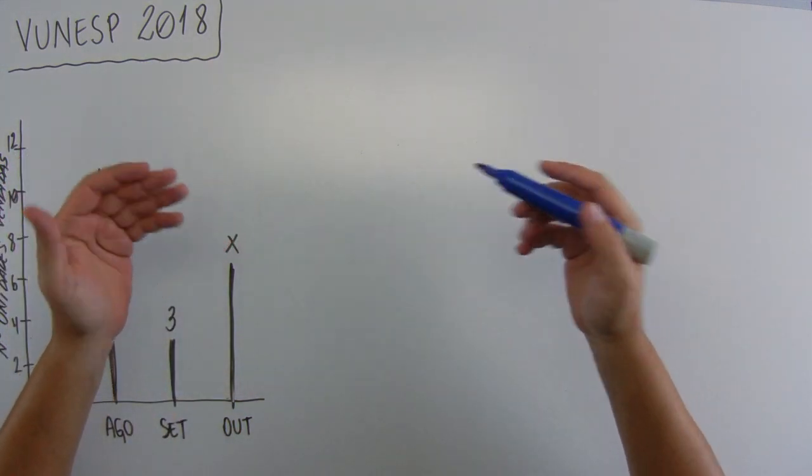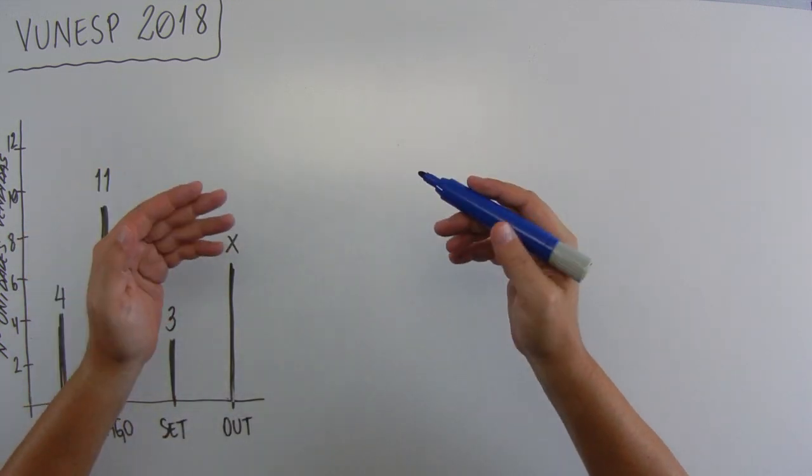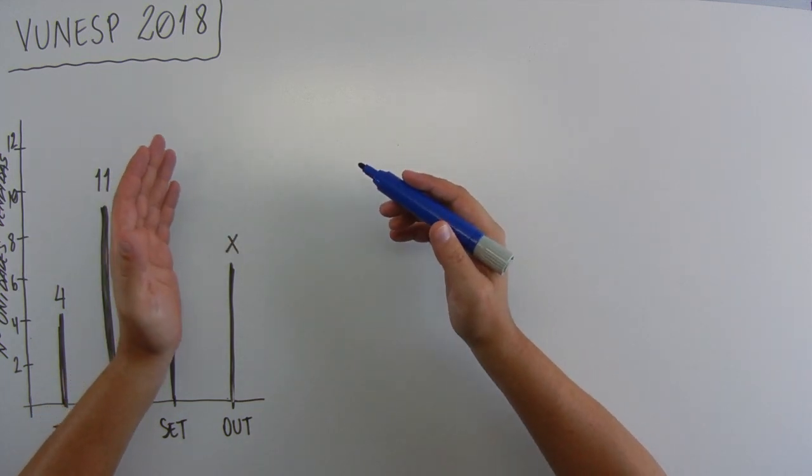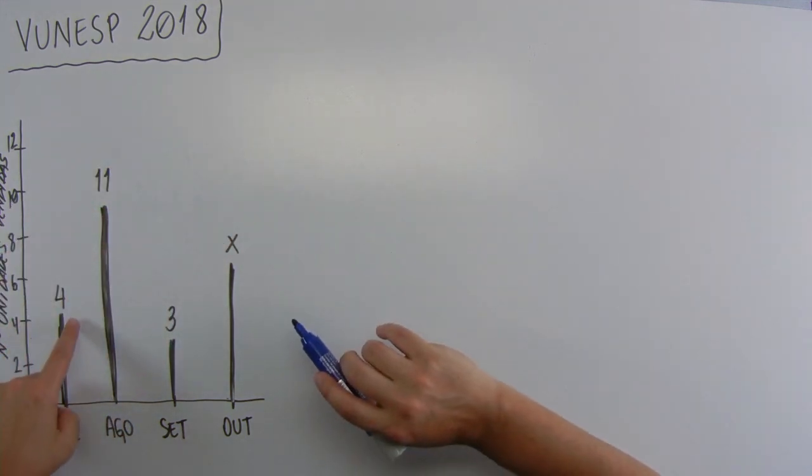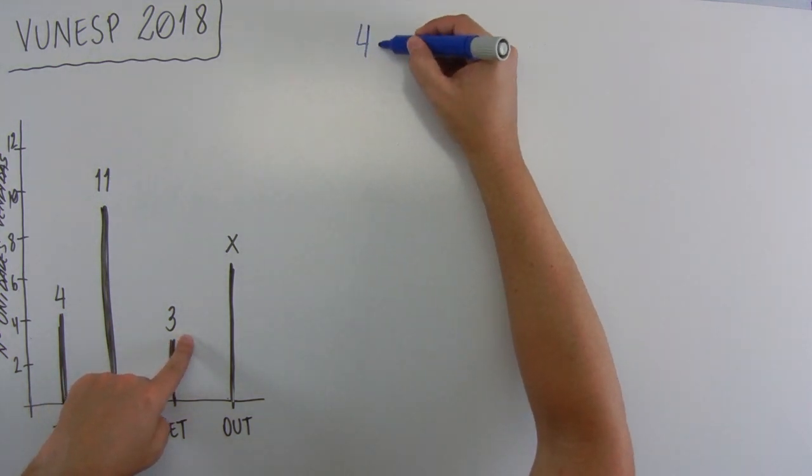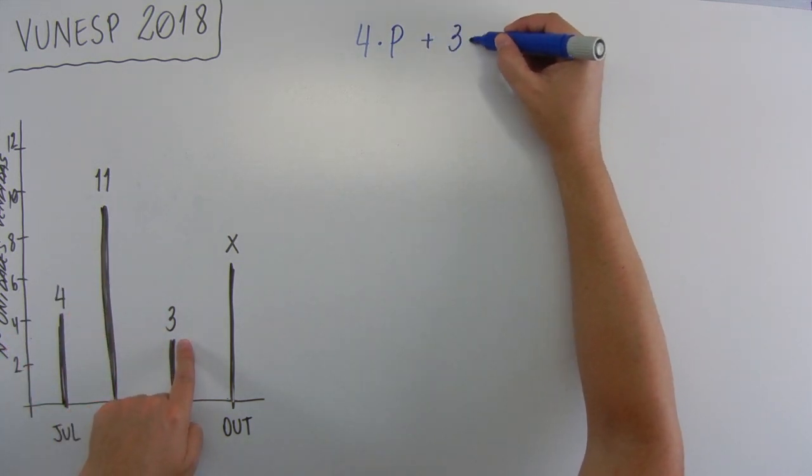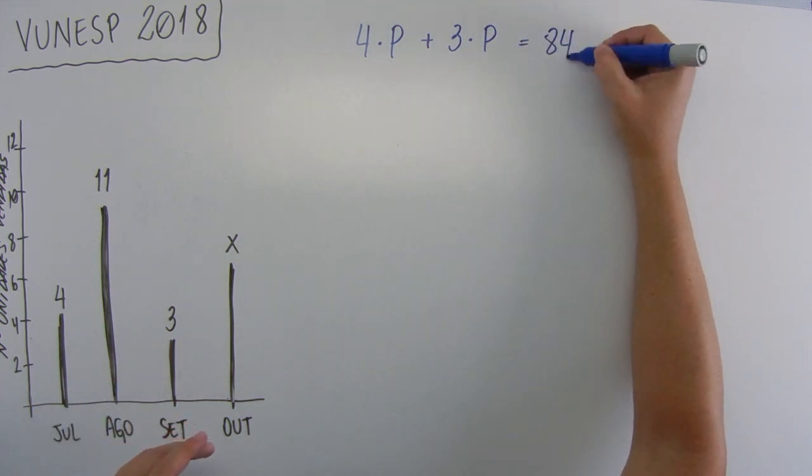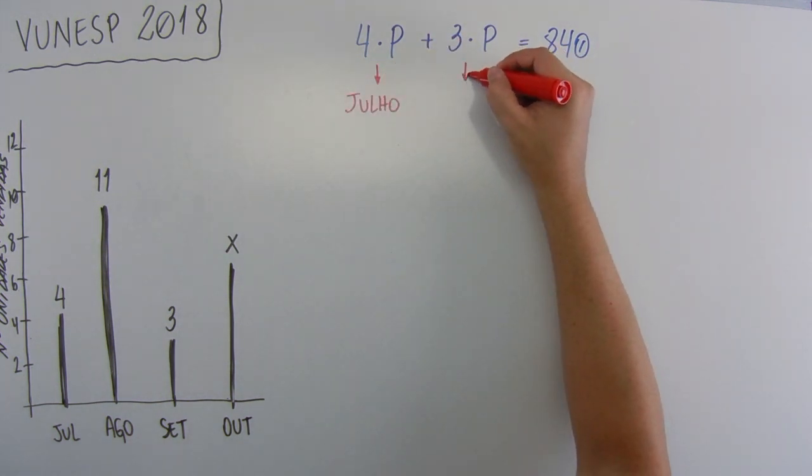O gráfico mostra o número de unidades de certo produto vendida nos meses de julho, agosto, setembro e outubro. Sabendo que a soma dos valores arrecadados com a venda desse produto nos meses de julho e de setembro foi 840 reais. Então, em julho ele vendeu 4 e em setembro ele vendeu 3. Então, 4 vezes o produto mais 3 vezes o produto deu 840 reais. Isso aqui é julho e isso aqui é setembro.